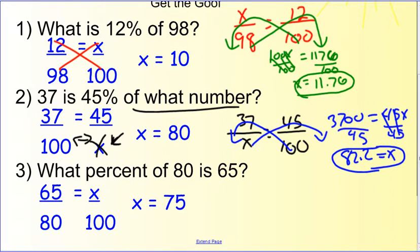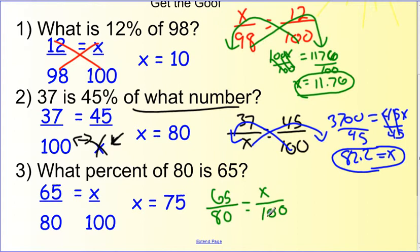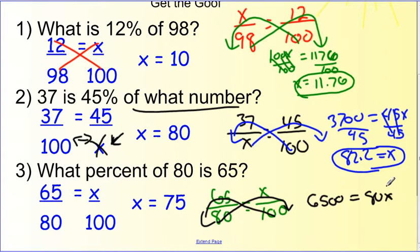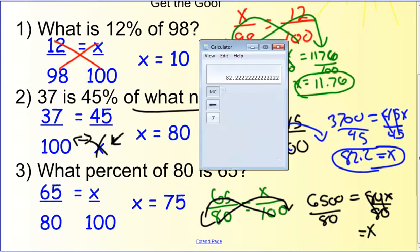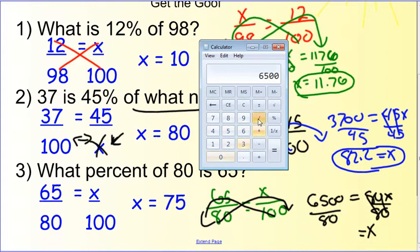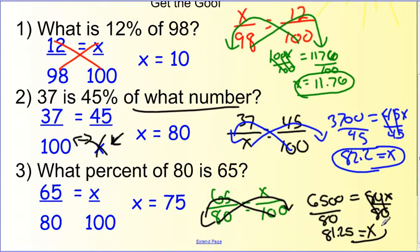Number three: what percent of 80 is 65? So, what percent over 100 of 80 is 65? Hey, look at that — the proportion was actually set up correctly. When we cross-multiply: 100 times 65 is 6500, and 80 times x is 80x. Divide by 80 on both sides. We get x equals 6500 divided by 80, which equals 81.25. So it's not good enough just to have the proportion set up correctly — you have to have the math correct as well.